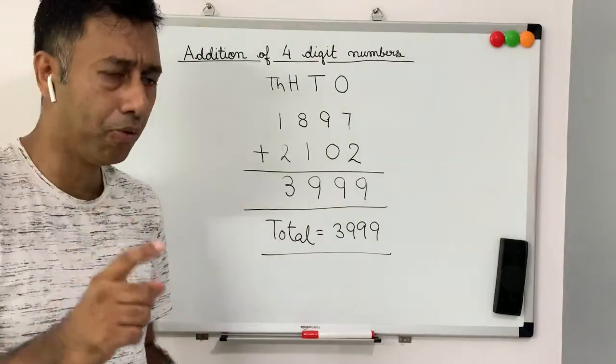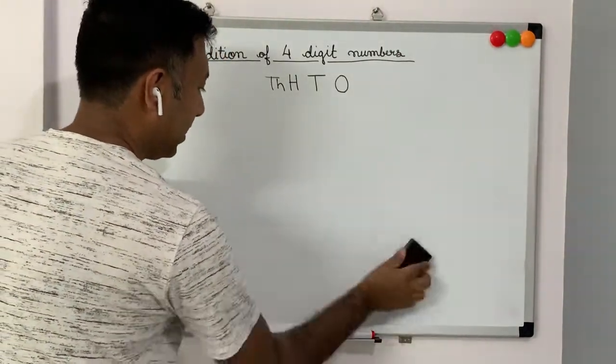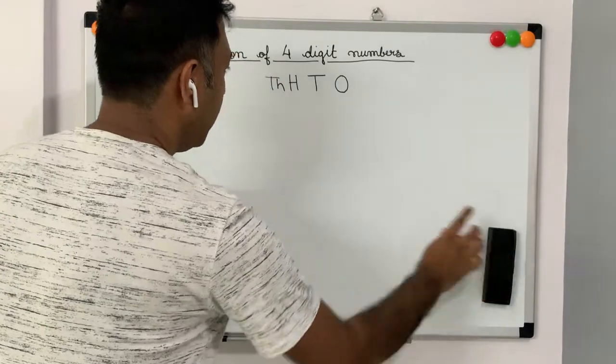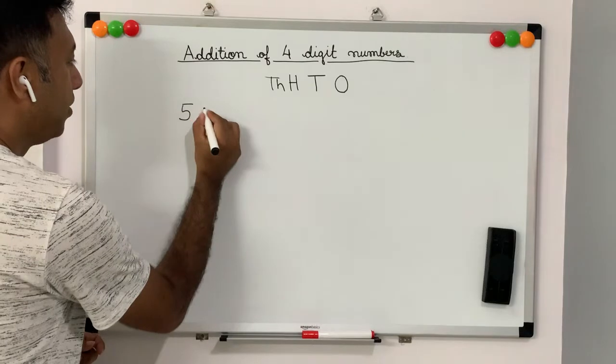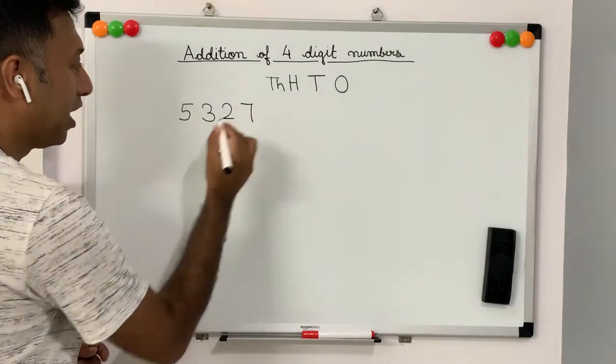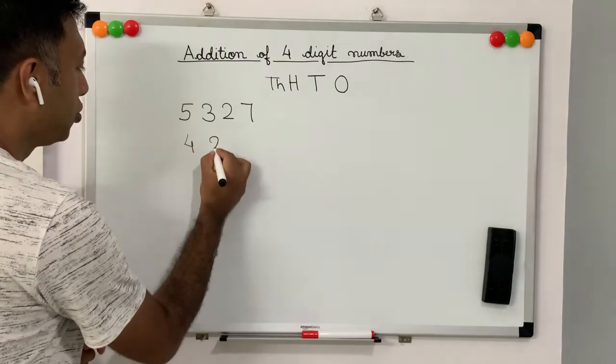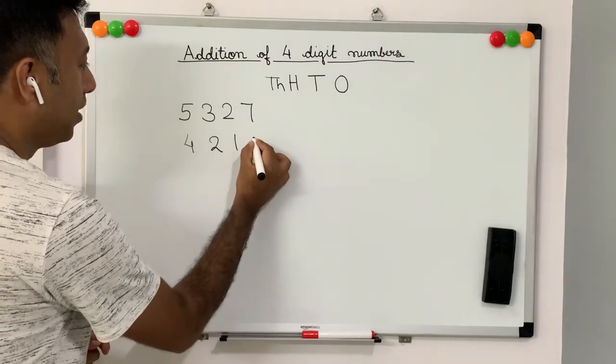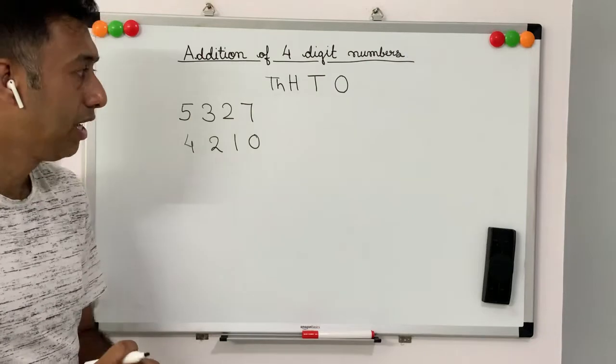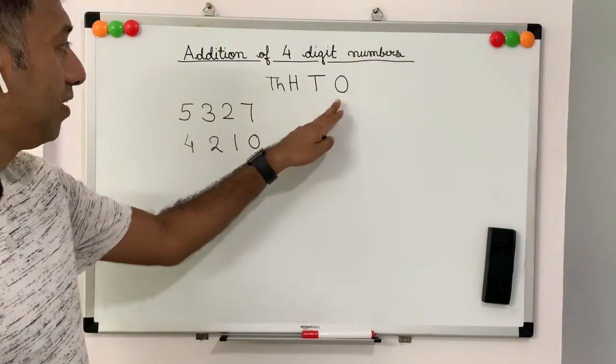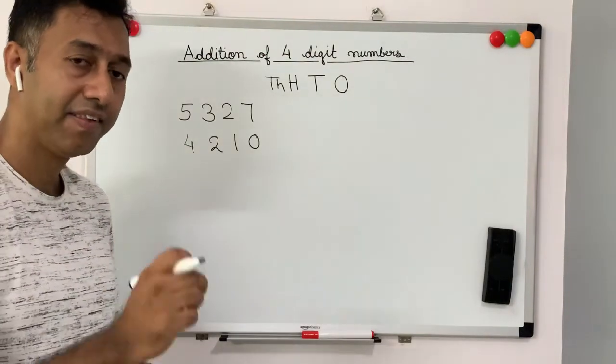Now, let's practice it one more time. Let me write the numbers. You copy and you do it in your notebook. 5, 3, 2, 7. Add it to 4, 2, 1, and 0. Quickly note it down in your notebooks. And then, put it inside these houses. And then, put a plus sign, and then do the addition.